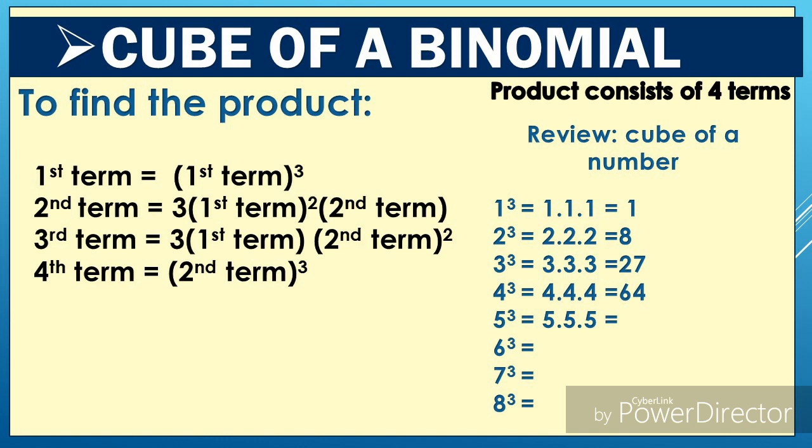We have some patterns to follow. Cube of a binomial product consists of four terms. To find the first term, we simply cube the first term. To find the second term, three times the square of the first term times the second term. To find the third term, three times the first term times the square of the second term. And to find the fourth term, we cube the second term.